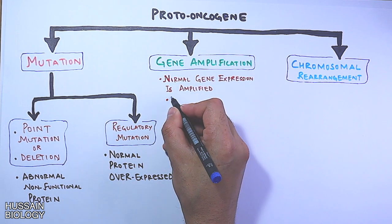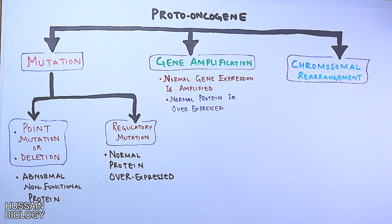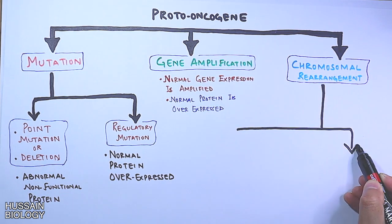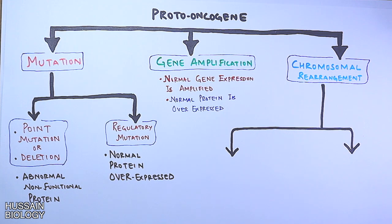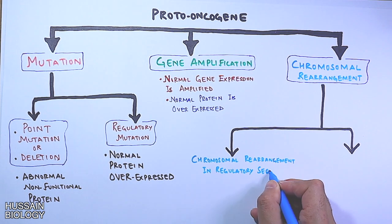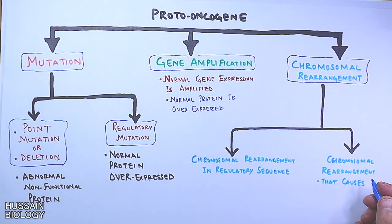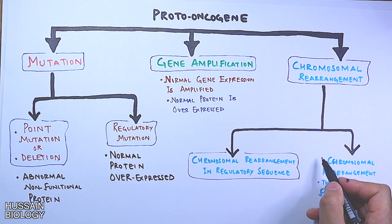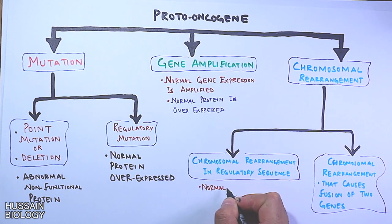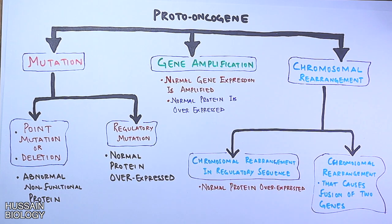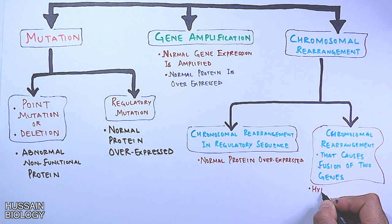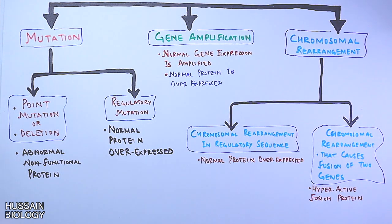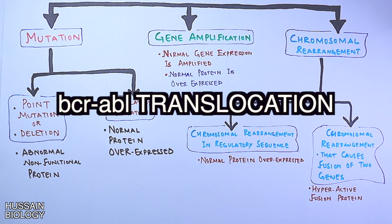The most significant event transforming proto-oncogenes into oncogenes is chromosomal rearrangement, which is of two types: rearrangement in regulatory sequences and rearrangement in protein-coding sequences. In regulatory sequence rearrangement, the normal protein is overexpressed. In coding sequence rearrangement, there is formation of a hyperactive fusion protein — such as the BCR-ABL rearrangement.